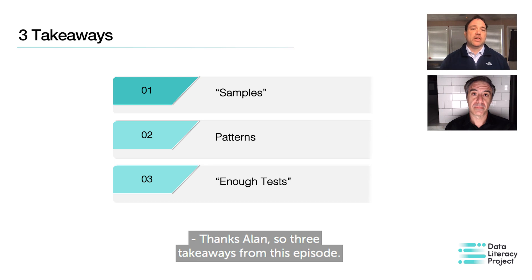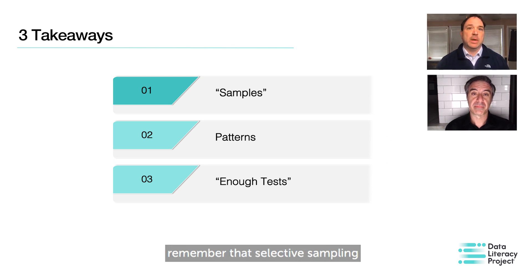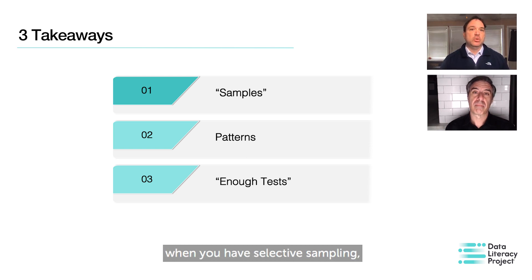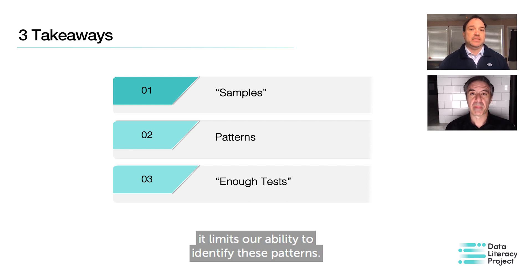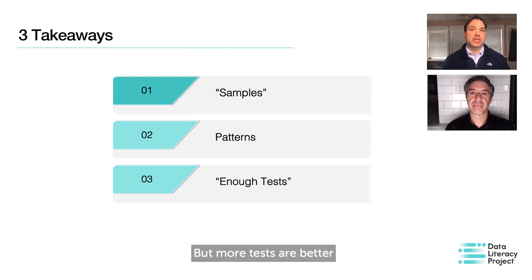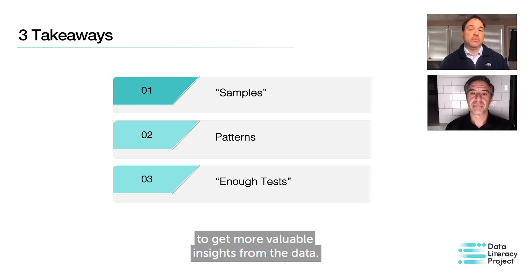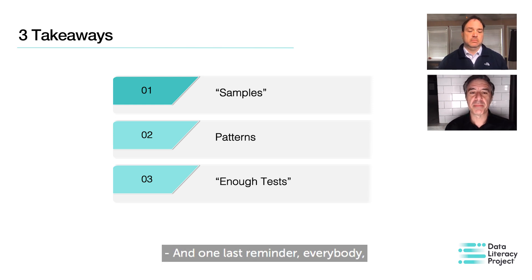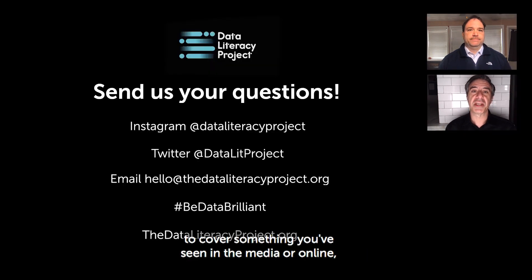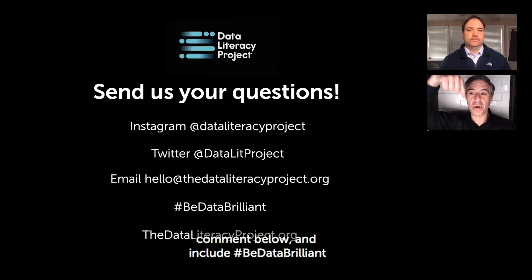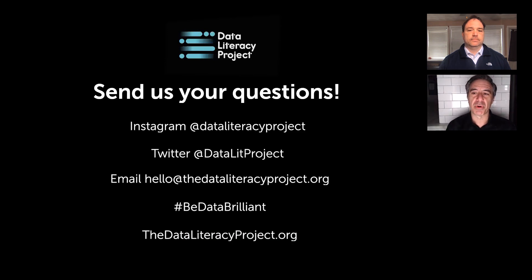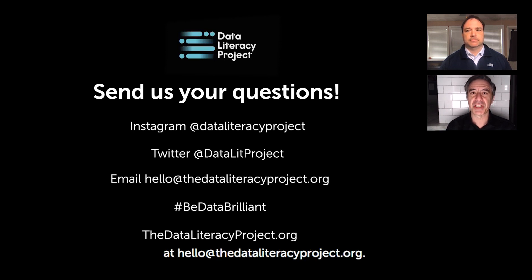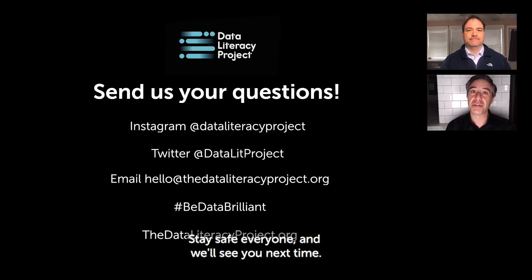Thanks, Alan. So three takeaways from this episode. Think about samples — remember that selective sampling does not equal random sampling. And as that relates to patterns, when you have selective sampling, it limits our ability to identify those patterns. And finally, as it relates to enough tests, as Alan said, there's no magic number, but more tests is better to get more valuable insights from the data. If you want to know more or want us to cover something you've seen in the media or online, comment below and include hashtag #BeDataBrilliant in your social post, or email us at hello@thedataliteracyproject.org. Stay safe, everyone, and we'll see you next time.